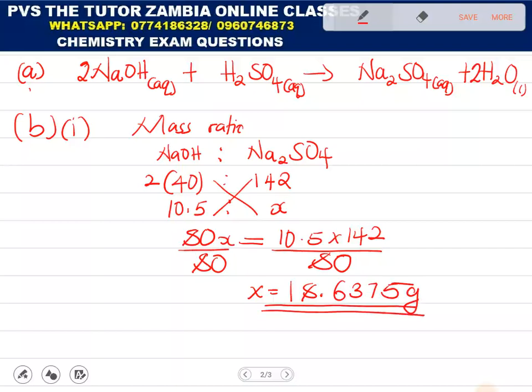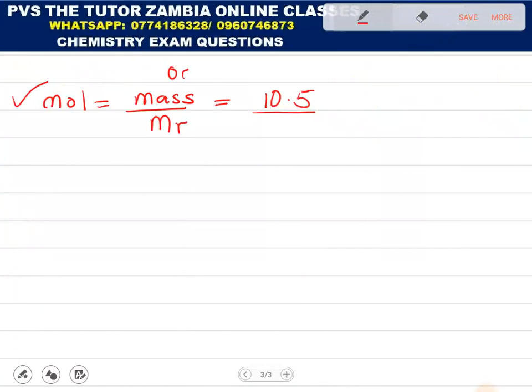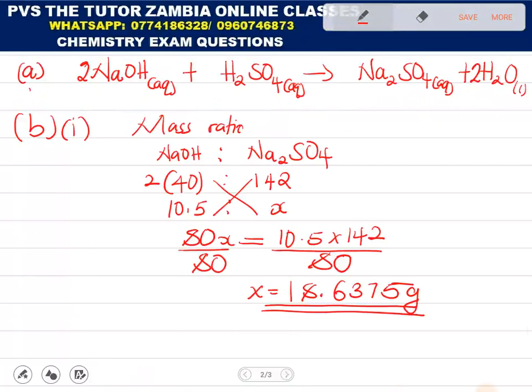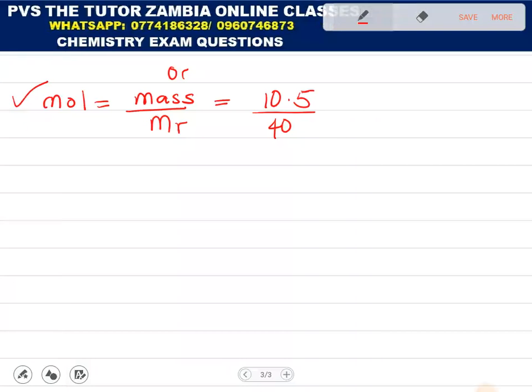Coming to the other method. We are going to get here we put 40, we remove the two. So, we just put 40. So, 10.5 by 40. I'm getting these are the number of moles. 0.2625 moles for sodium hydroxide.